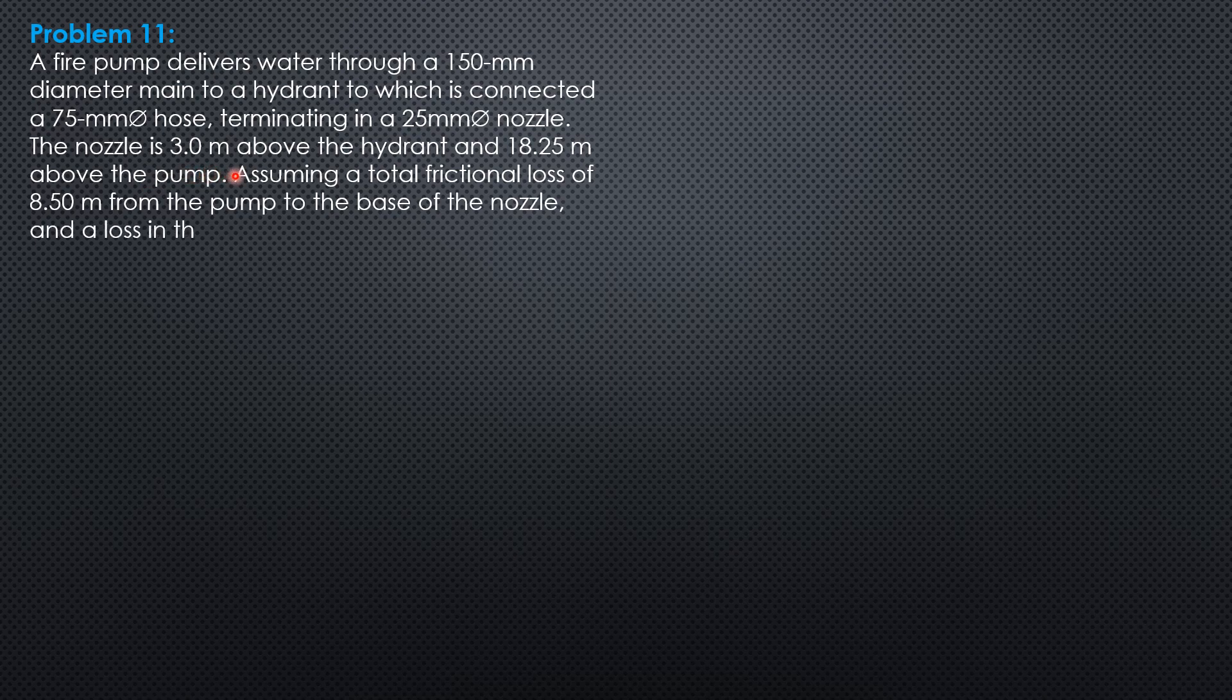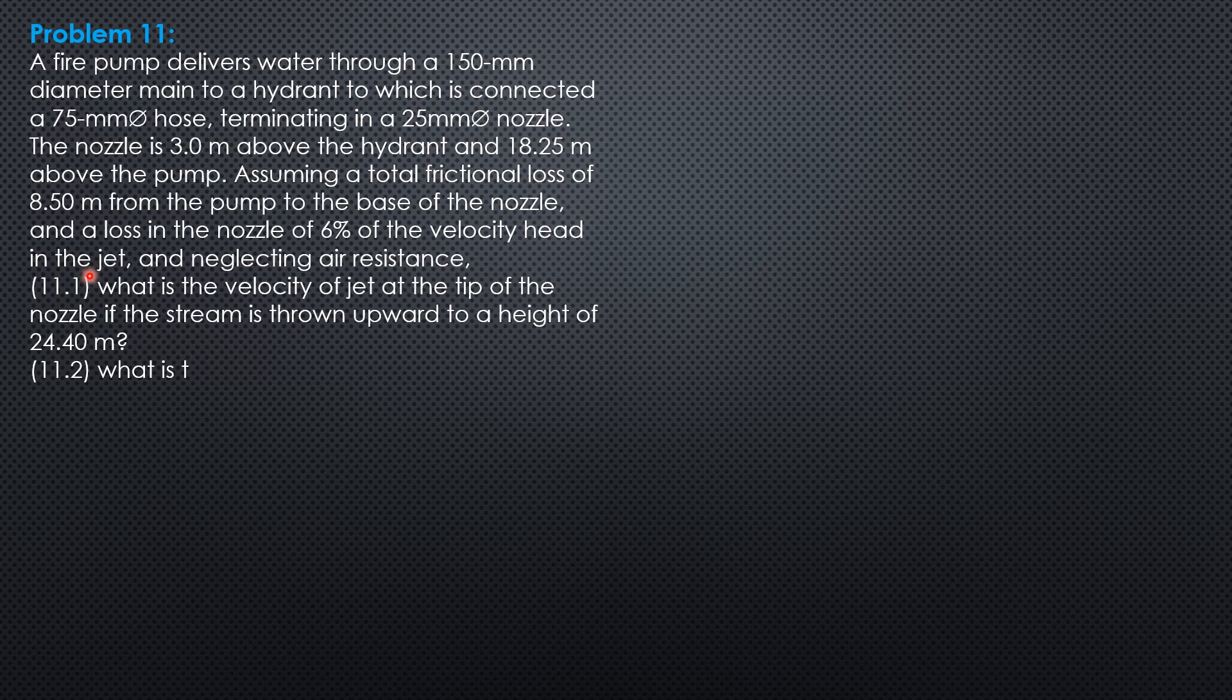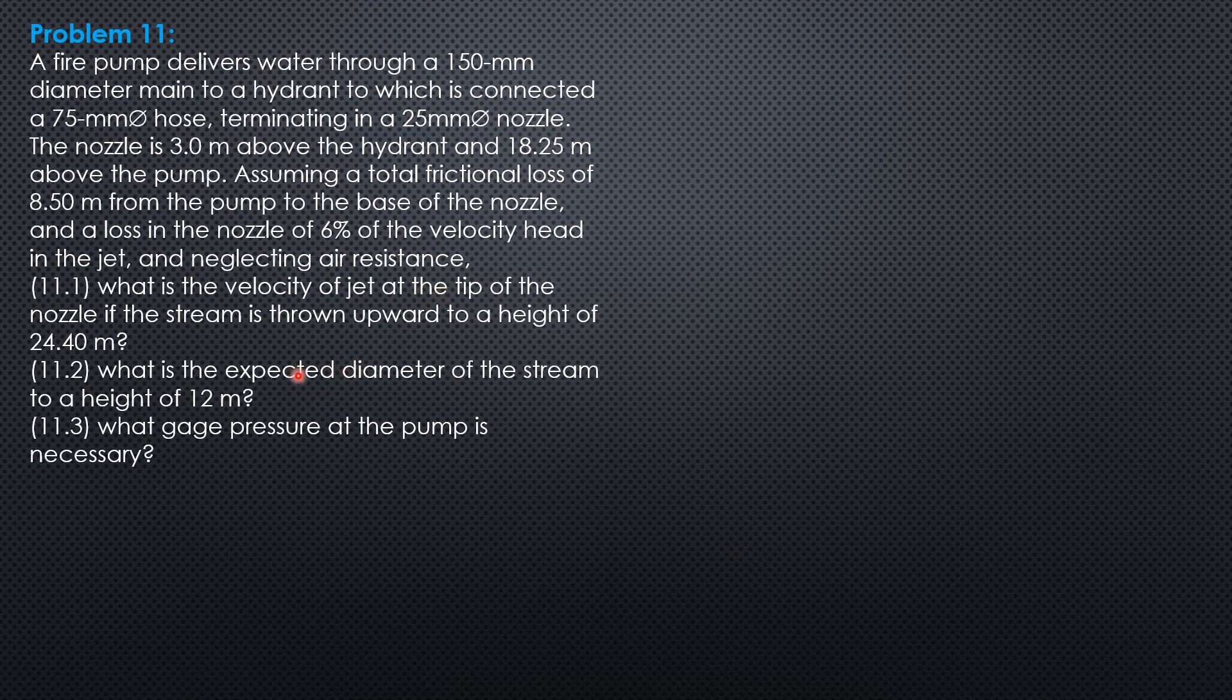The nozzle is 3 meters above the hydrant and 18.25 meters above the pump. Assuming a total frictional loss of 8.5 meters from the pump to the base of the nozzle, and a loss in the nozzle of 6% of the velocity head in the jet, and neglecting air resistance. First, what is the velocity of the jet at the tip of the nozzle if the stream is thrown upward to a height of 24.4 meters? What is the expected diameter of the stream to a height of 12 meters, and what gauge pressure at the pump is necessary?